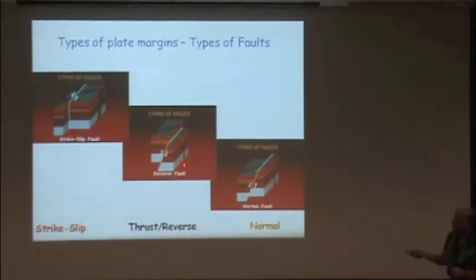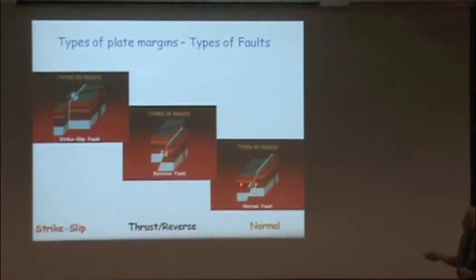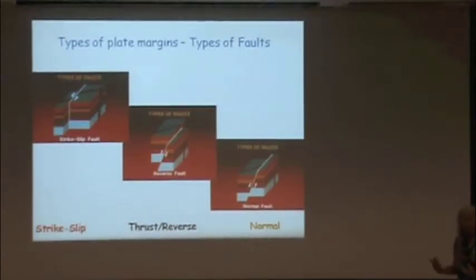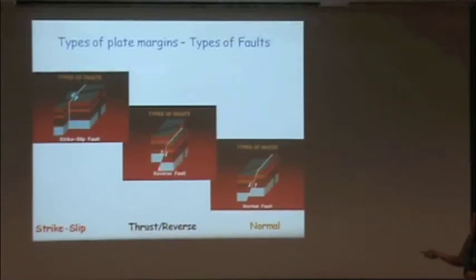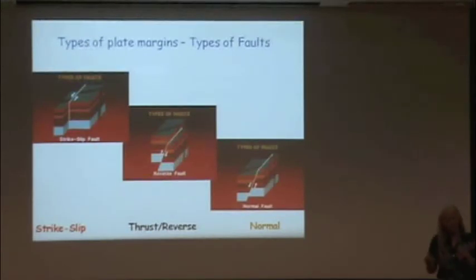On a normal fault, the hanging wall goes down and the downhill side relatively goes up. We can't say which one is actually moving — it's always relative. On a reverse fault, the uphill side goes up. And in a strike-slip fault, the two sides just go past each other. Typically no fault is exactly any one of these, although the San Andreas fault is really pretty close. We can get mixes — a fault that's both strike-slip and reverse, or both strike-slip and normal.